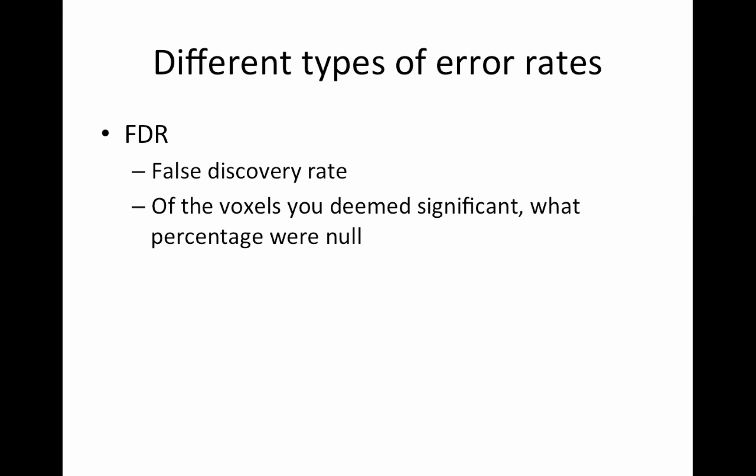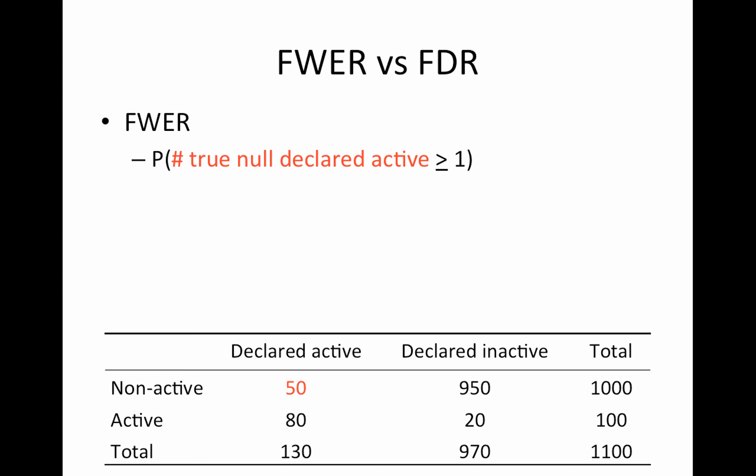False discovery rate focuses on a category of your data. Specifically, it looks at all the tests you've rejected and tries to control the percentage of those that were false rejections. We'll step through this using the two-by-two contingency table.